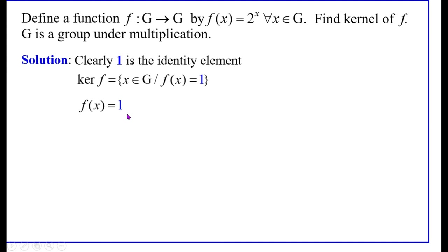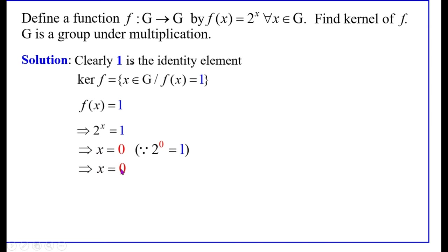F(X) is defined as 2^X. Therefore 2^X equals 1. We know 2^0 equals 1, so X equals 0. Thus X equals 0, and hence ker(F) equals {0}. That is, 0 of the domain group G is mapped into the identity element 1 of the co-domain group G. Note that both G's are one and the same. Therefore ker(F) equals {0}.